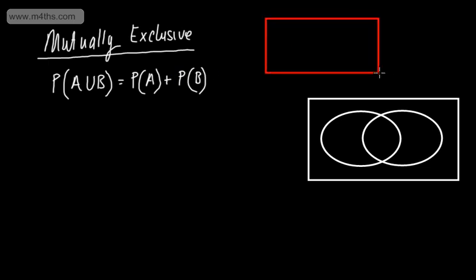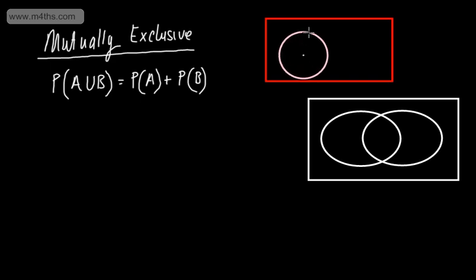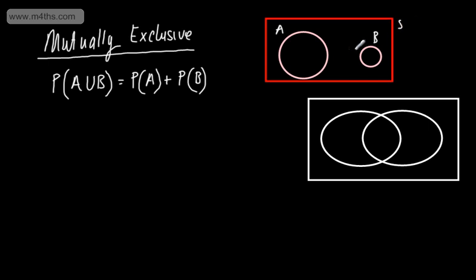If I wanted to show mutually exclusive events in a Venn diagram, I could have one event here and the other event here, labelling them A and B. This is just one example of how mutually exclusive events could be shown using a Venn diagram.